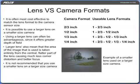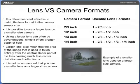Using a larger lens can often be advantageous, since it offers greater depth of field — the range of distances from the lens before objects are too close or too far away to be in focus. Larger lenses also mean that the area of the image used is taken entirely from the central, flatter part of the lens, causing much less corner distortion and better focus. It is not recommended that you use a smaller lens on a larger size camera.